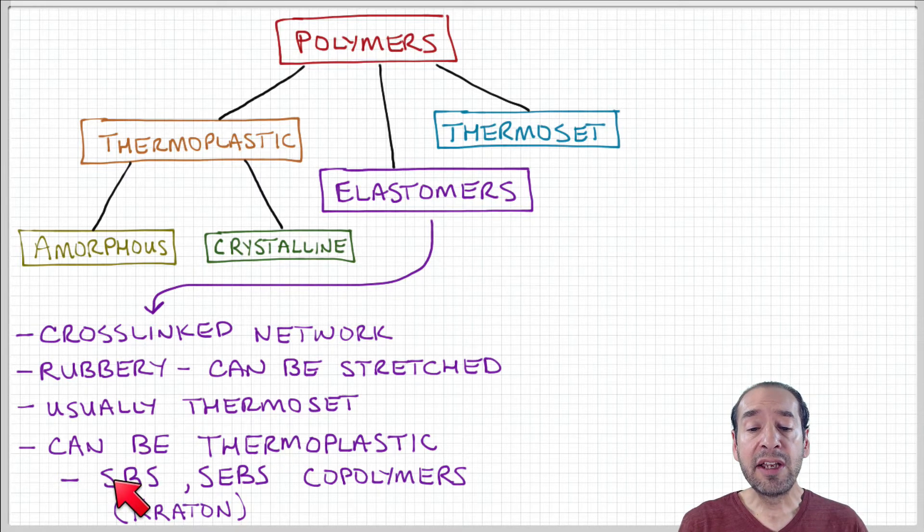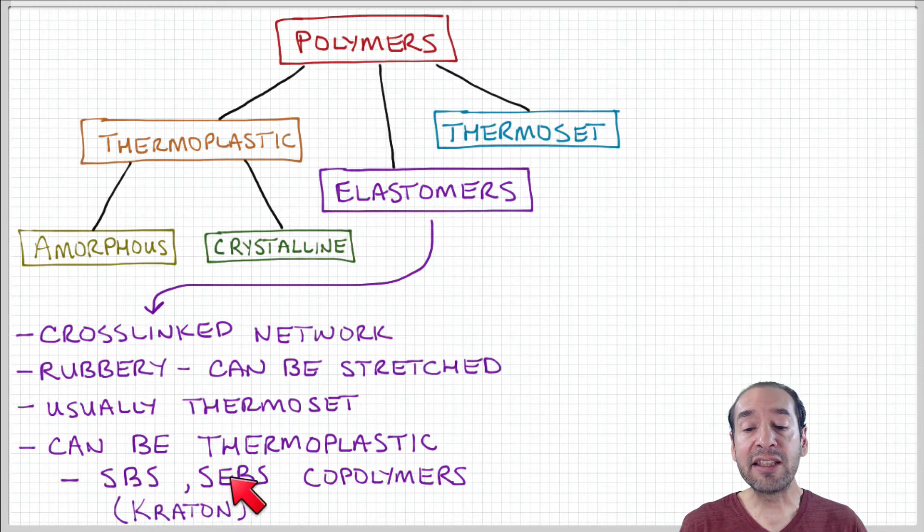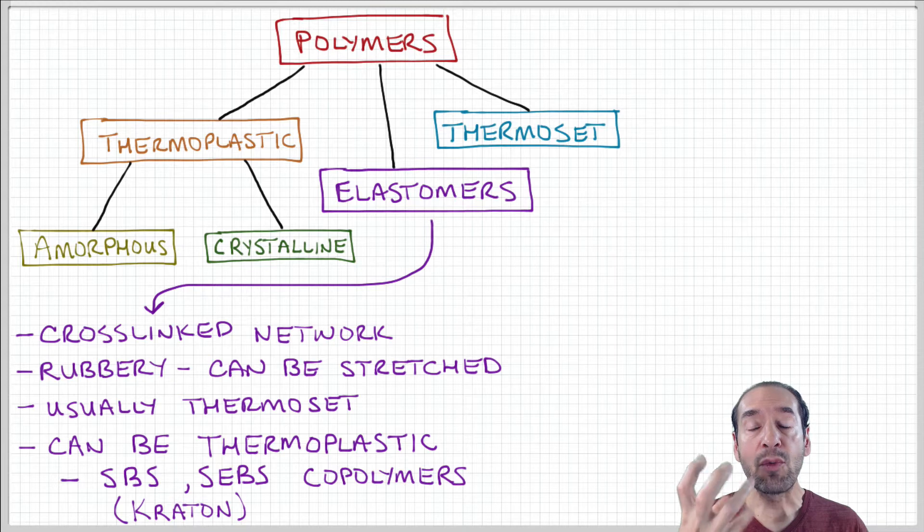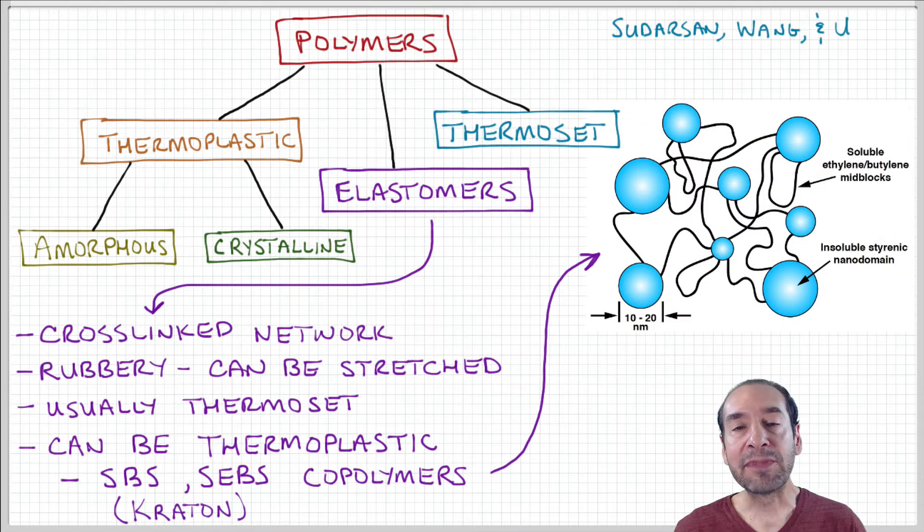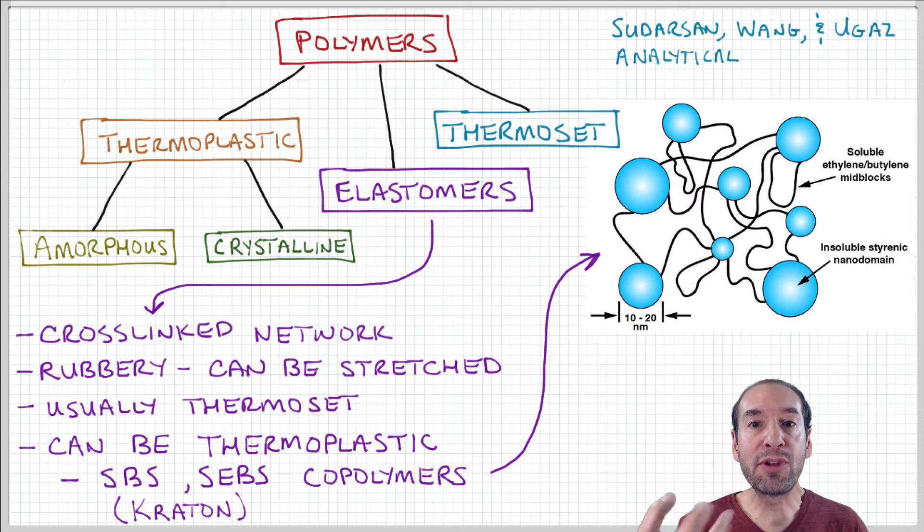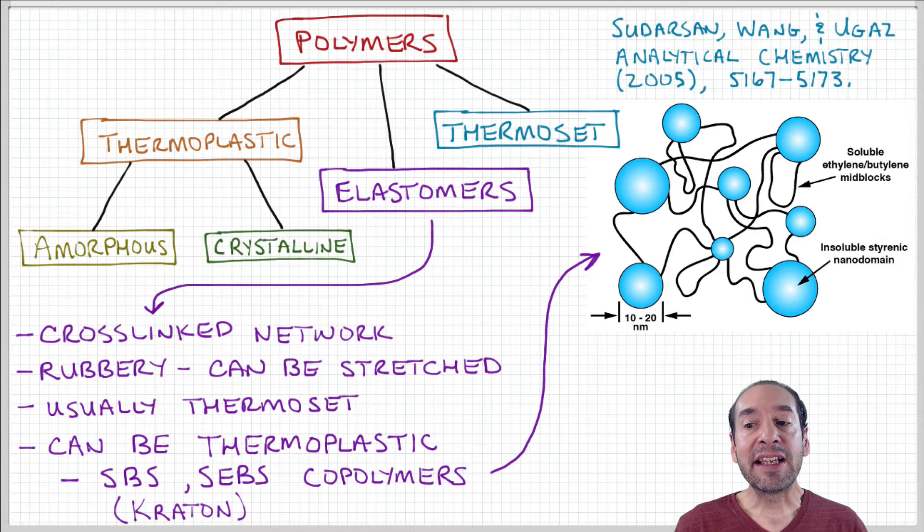They're usually copolymers. In some cases some examples are styrene butadiene styrene or styrene ethylene butadiene styrene. And these are interesting materials because they are rubbery when they're solid but they can be heated, melted and shaped just like thermoplastic materials. Craton is a brand name for some of these materials. So these are used in many applications like shoe soles for athletic shoes, pressure sensitive adhesives, things like that.